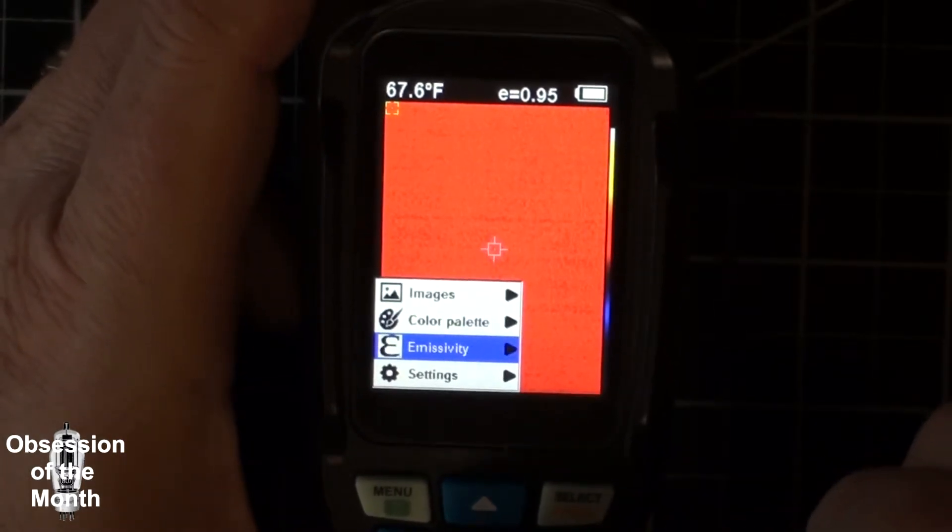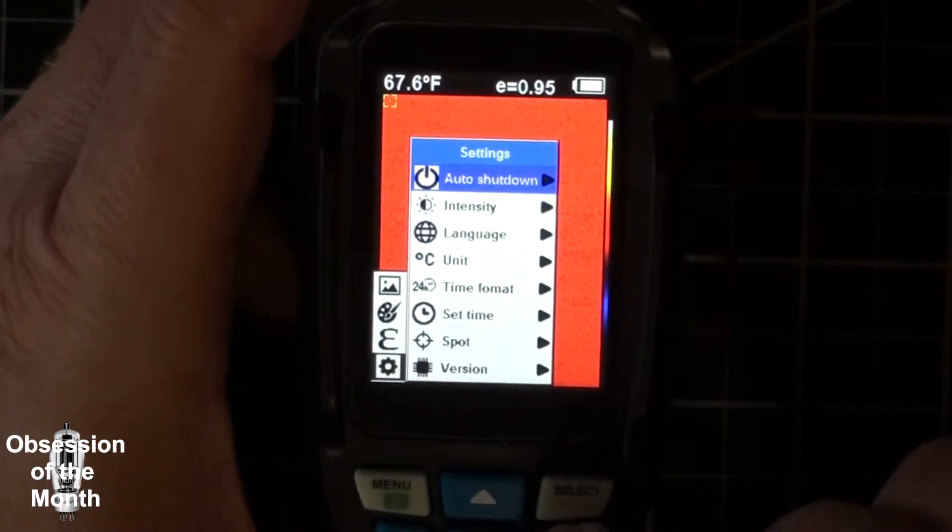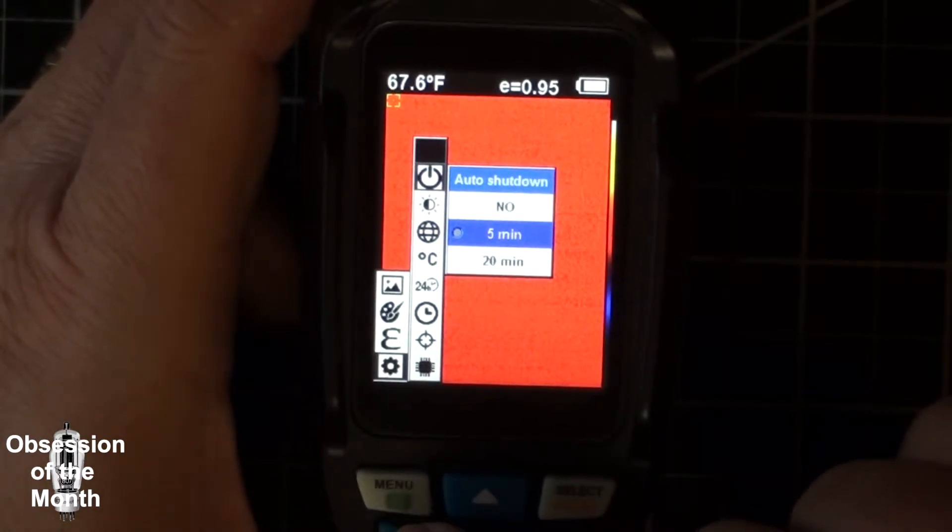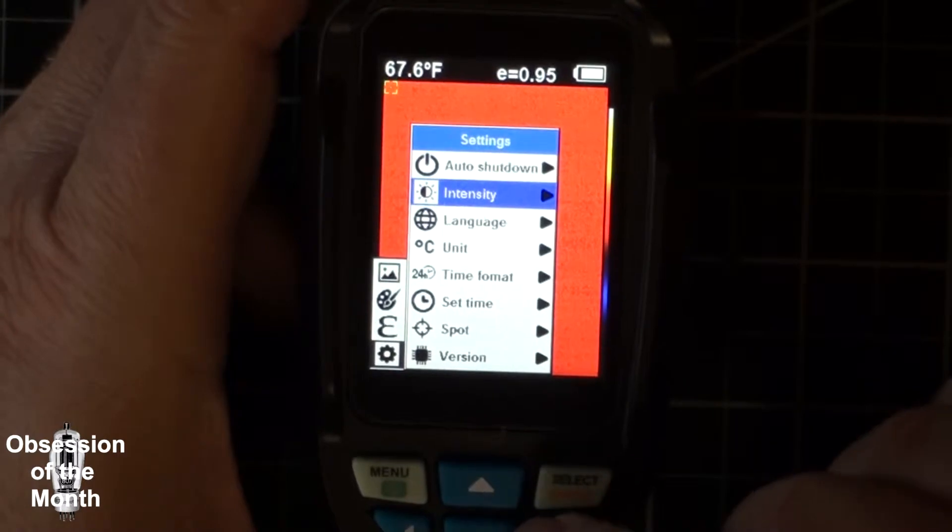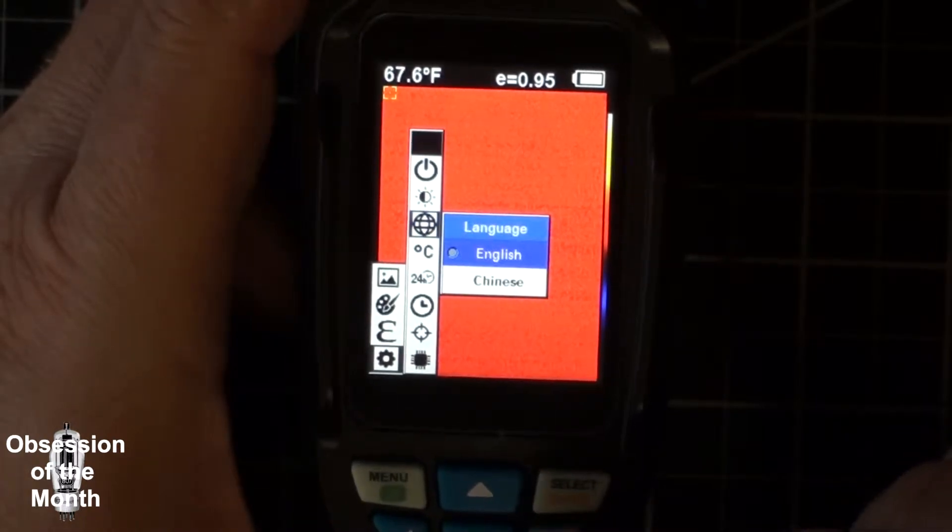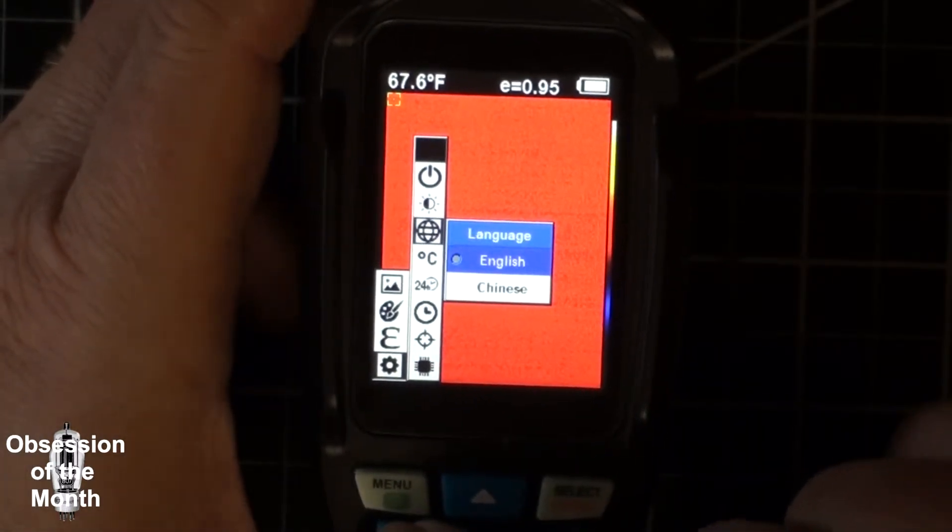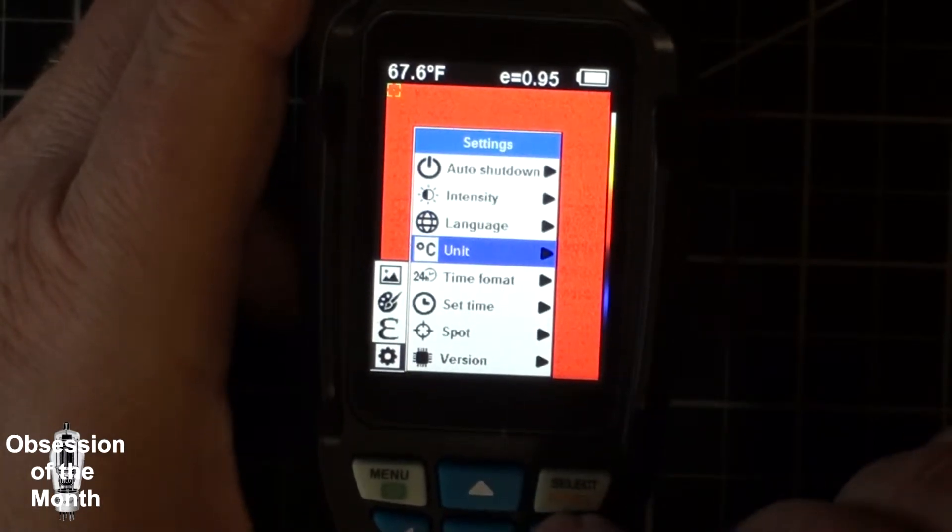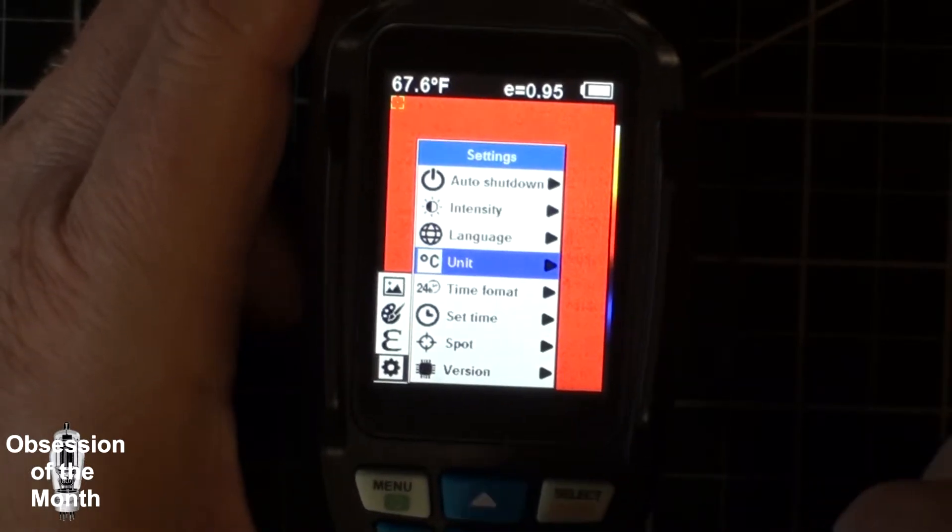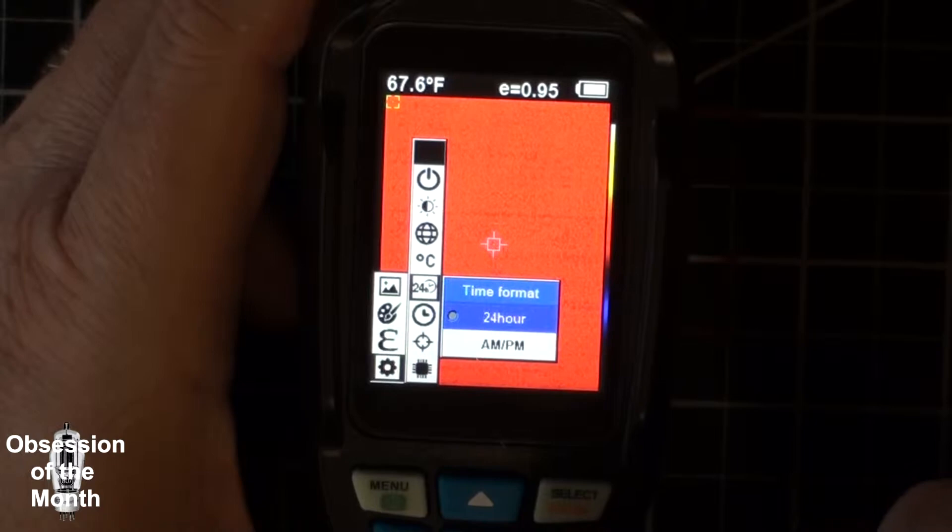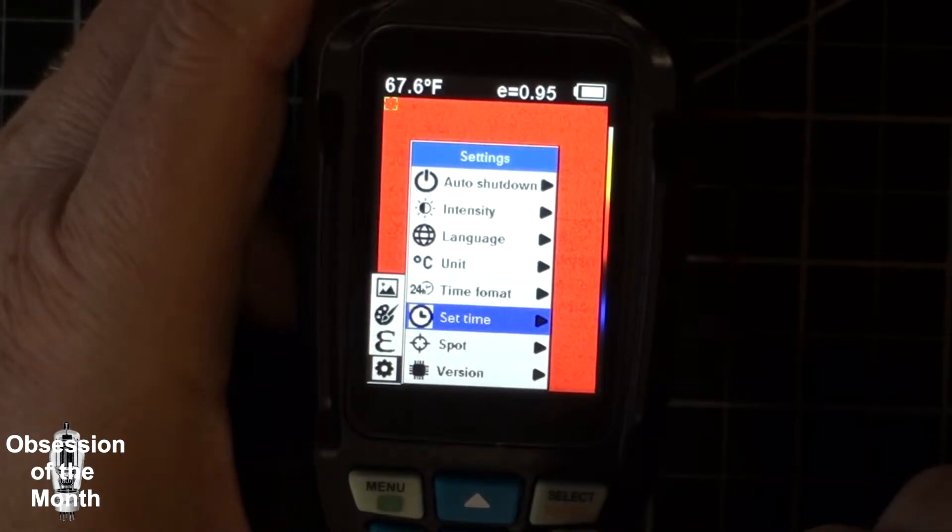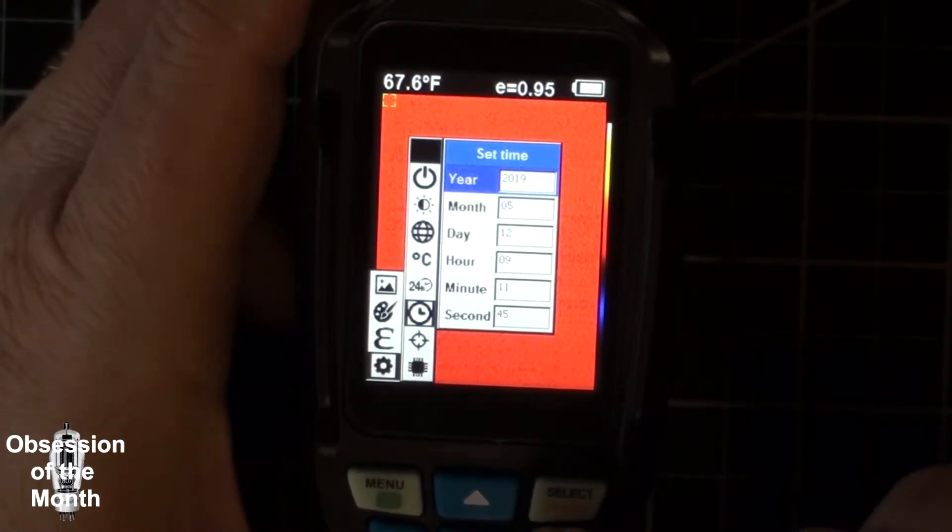Settings, we have an auto shutdown which is max 20 minutes, 5 minutes, or no shutdown. Intensity, which I believe is the screen brightness. Language, you have a choice of English or Chinese, the only two languages in the world. Temperature units, Celsius or freedom. Time format, 24 hours or children. You can set the time, date, and year and all that.